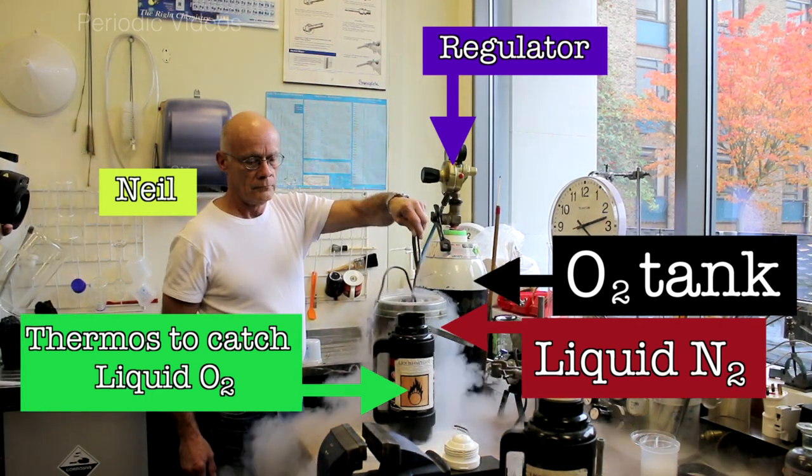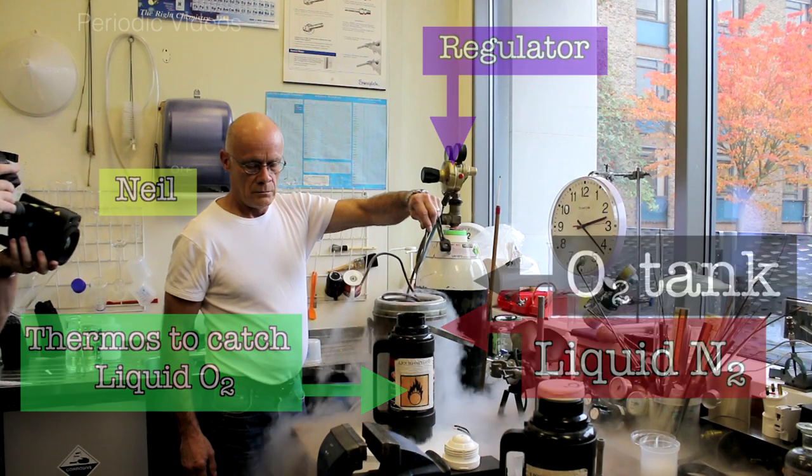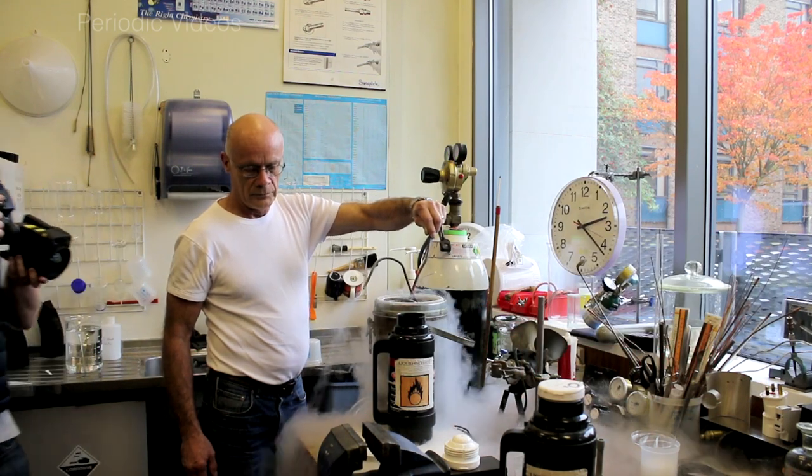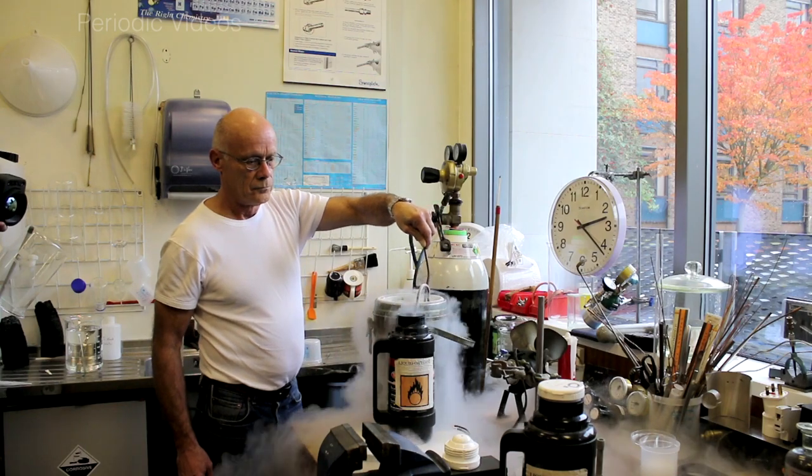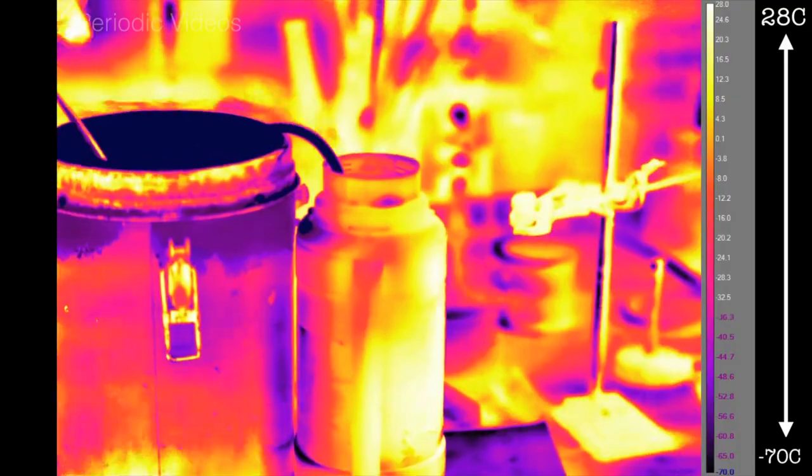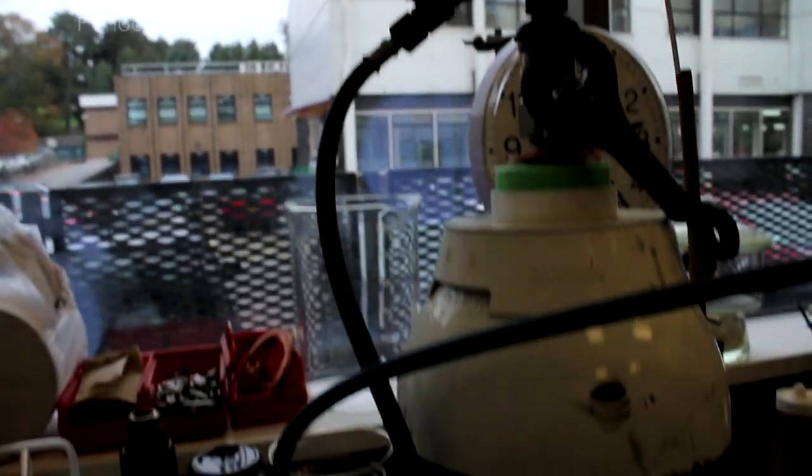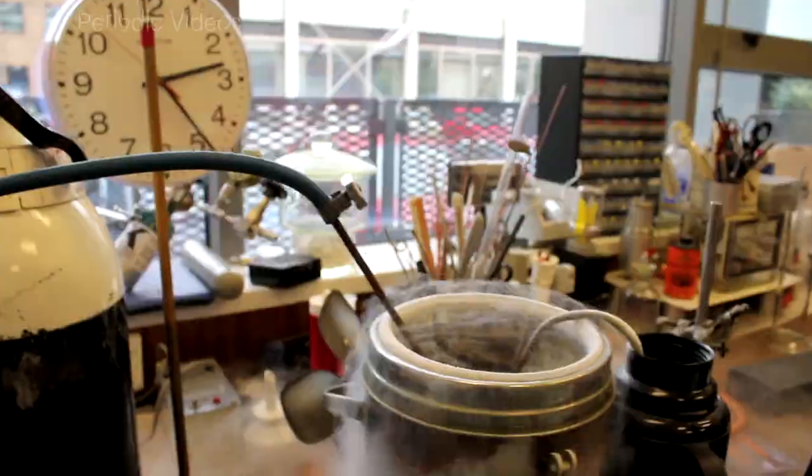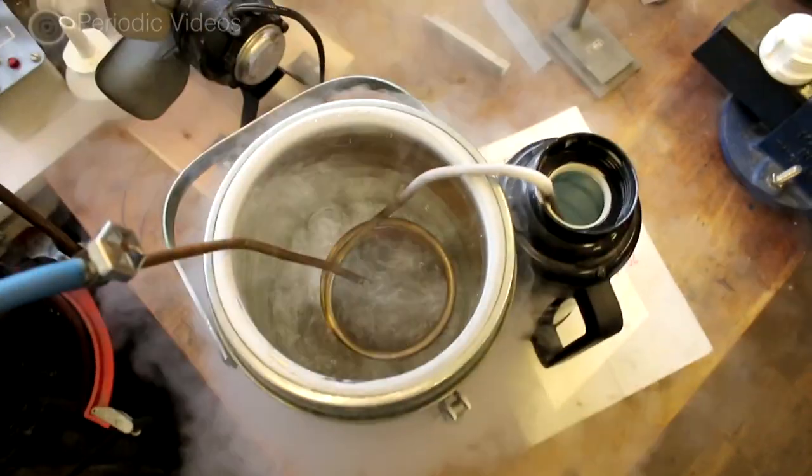But because there's a flow, it goes right through and doesn't solidify in the coil. So, the gas comes out of the cylinder at a low pressure, but flowing quite fast. It flows down a tube into the copper coil, which is cold.